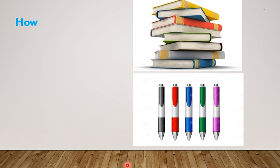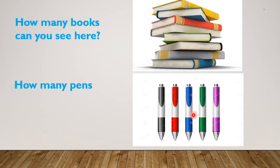If I ask you how many books can you see here, how many pens can you see here, you will count automatically, naturally starting from 1, 2, 3, then 4 and so on, like that, right?